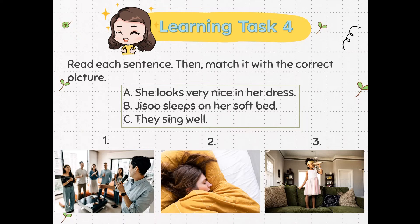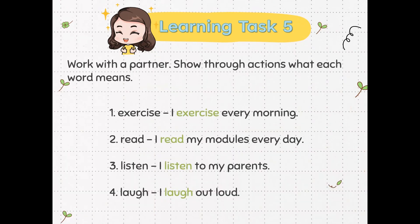Let's read each sentence, then match it with the correct picture. Number 7A: She looks very nice in her dress. Number 8B: Jesus sleeps on her soft bed. Number 8C: They sing well.